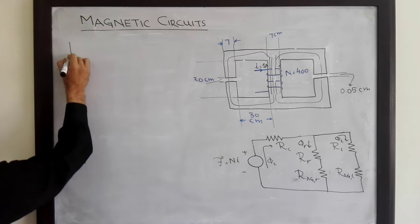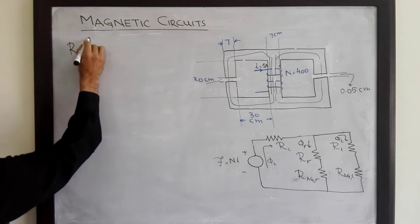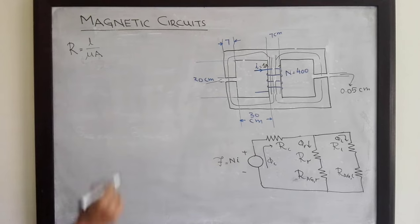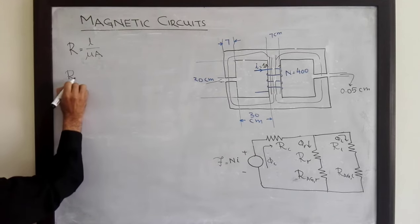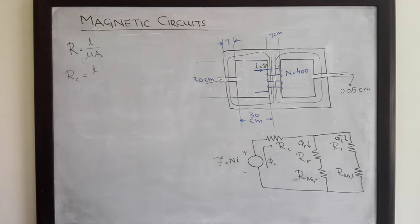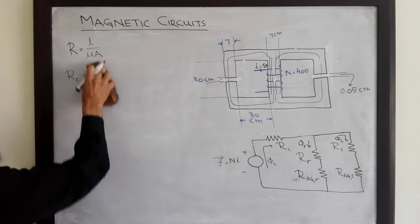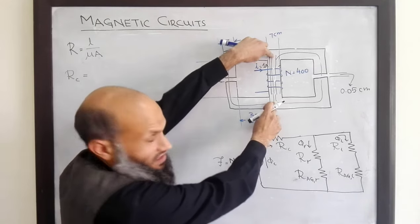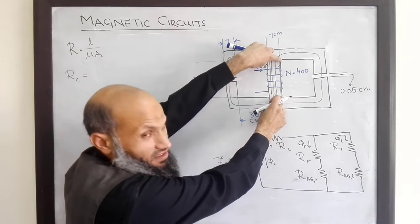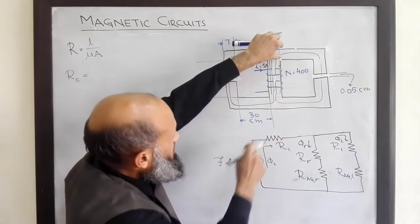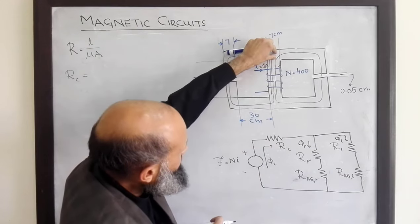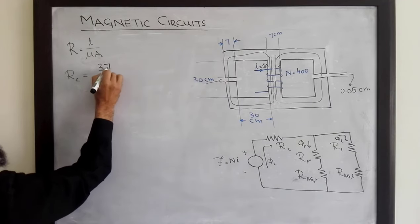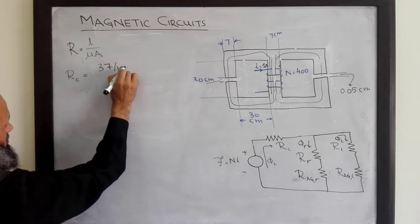The relation for reluctance is given by L divided by mu multiplied by area. The reluctance of the central limb uses the length from one end to the other, which is 30 centimeters plus half of 7 plus half of 7, giving 37 centimeters. To convert to meters: 37 divided by 100.